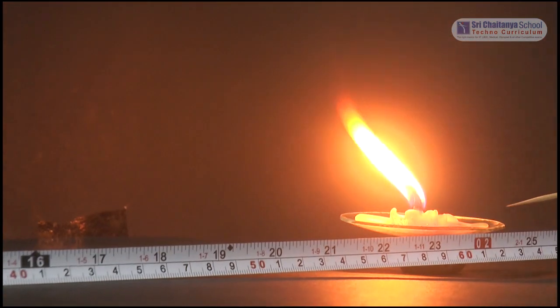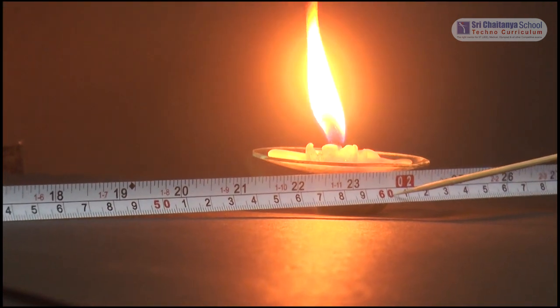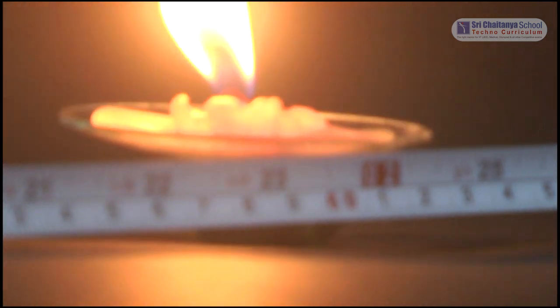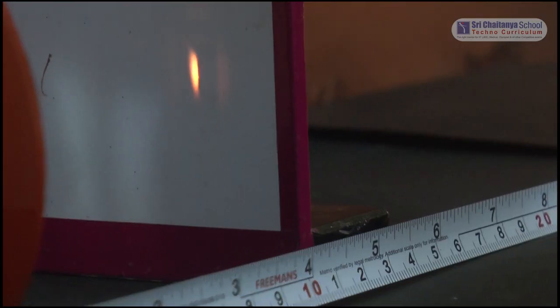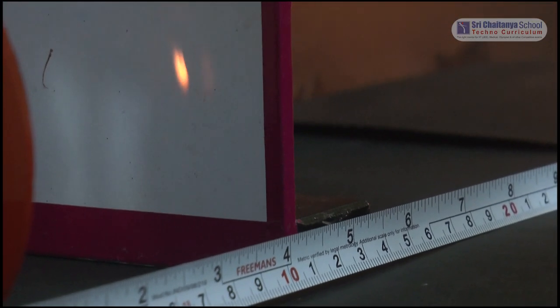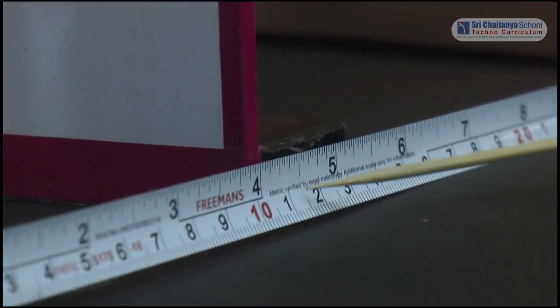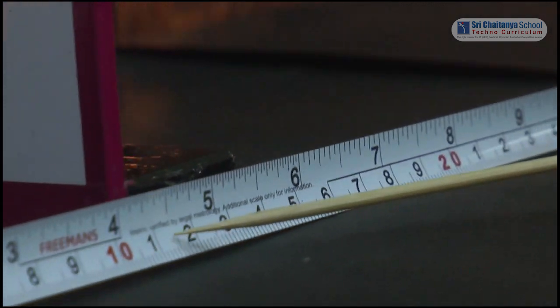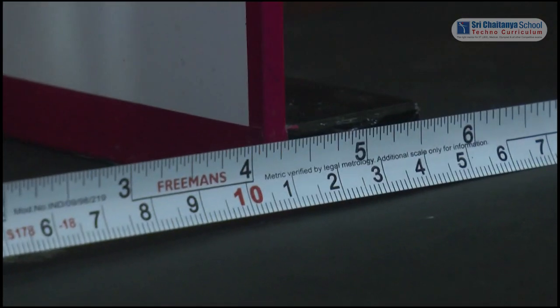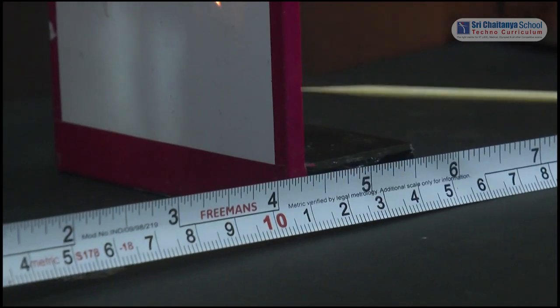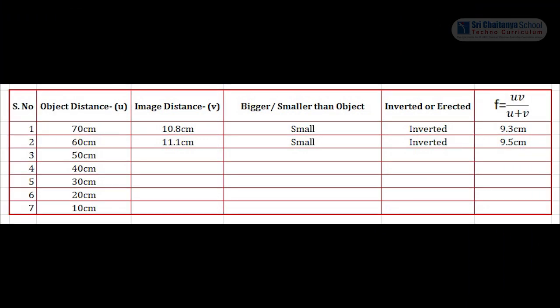Now move the object a little forward and keep it at nearly 60 cm. The object is placed at 60 cm. Again, find the image by adjusting the screen back and forth until a sharp image is obtained. Notice the value of image distance — here we get the image distance at about 11.1 cm. Note down the values: object distance 60 cm, image distance 16.1 cm, and the focal length is 9.5 cm from the formula.